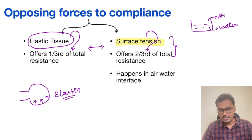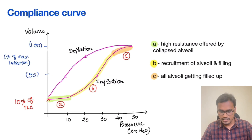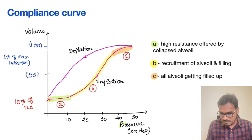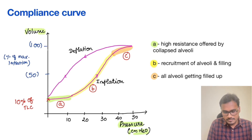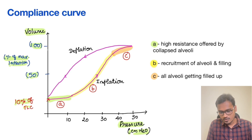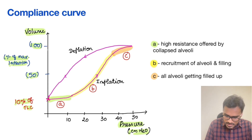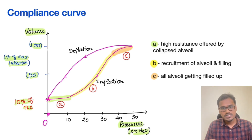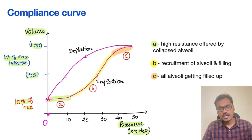Now let's discuss the compliance curve. On the x-axis is transpulmonary pressure in centimeters of water, and on the y-axis is volume as a percentage of maximum inflation — values of 100%, 50%, and 10% of total lung capacity. Even at the beginning of the curve, it does not start at zero; it starts at 10% of TLC because even after alveolar collapse, some minimal volume remains inside the lung.